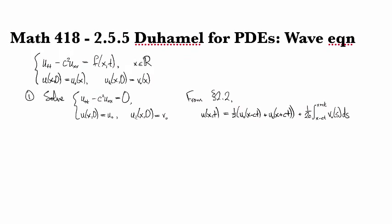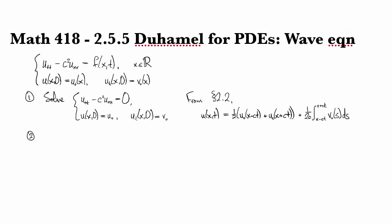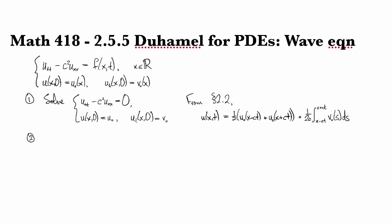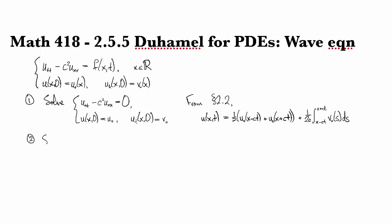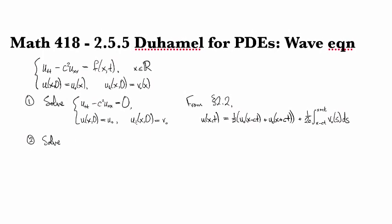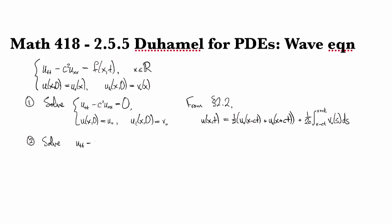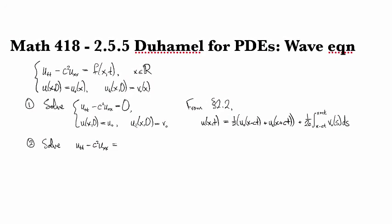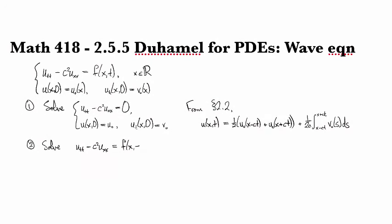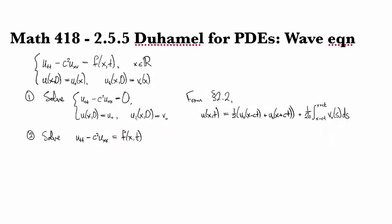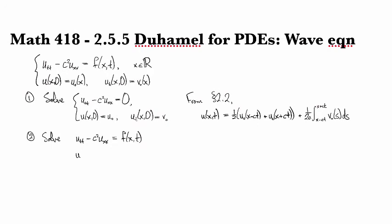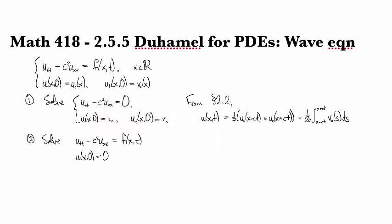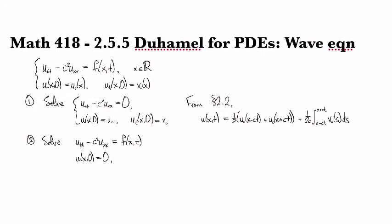So then the next step is going to be to look for the particular solution with the homogeneous initial conditions. So we're going to look at solving Utt minus C squared Uxx equals, and here we put the non-homogeneous term F. So we have the homogeneous boundary conditions or initial conditions, rather.